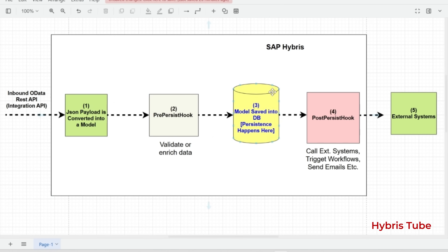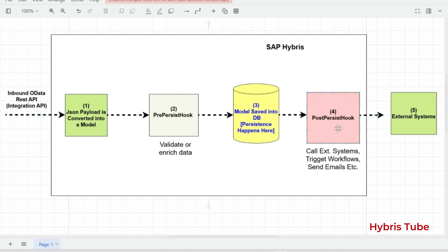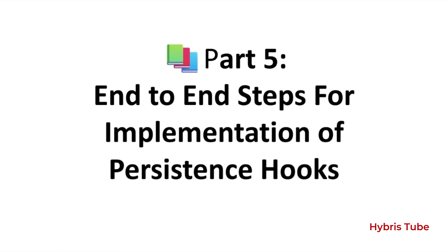In step three, the actual persistence of data into the database happens. Once the pre-persist hook has executed, the model is persisted — this is exactly where the term 'persistence hook' comes from. In step four, the post-persist hook comes into the picture. After the model has been saved successfully, the post-persist hook is triggered. This is very powerful because here you can integrate with external systems, trigger workflows, send emails, or execute any custom logic that needs to happen after persistence.